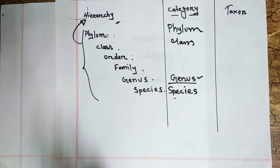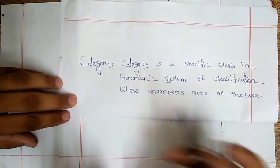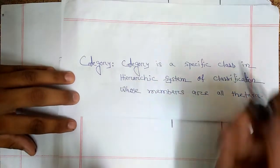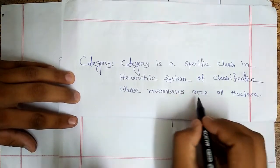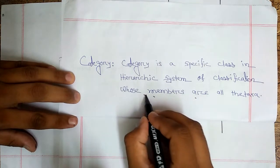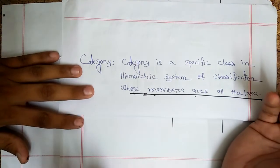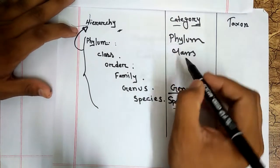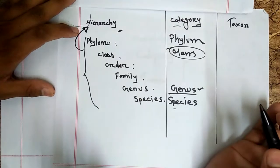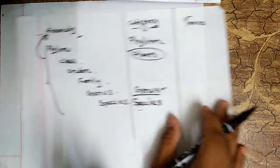If we look at the definition of category: category is a specific class in a hierarchic system of classification. Its members are all the taxa — I will discuss that last line after some time. But in simple terms, category is just a specific rank of hierarchy classification.